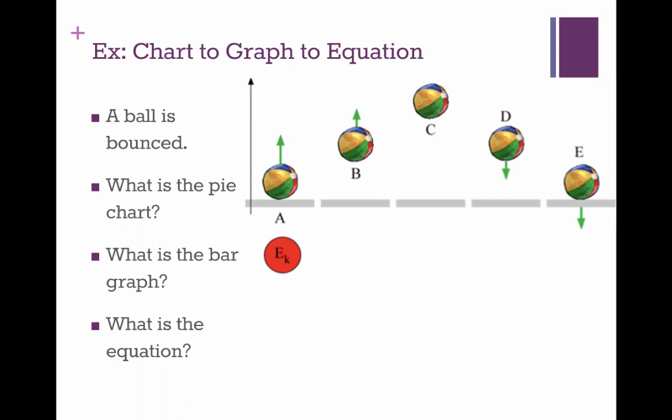So the pie chart for A would be Ek, B would be half and half, C would be all Eg, D would be half and half, and E would be all Ek again.